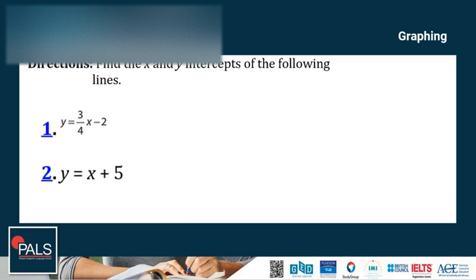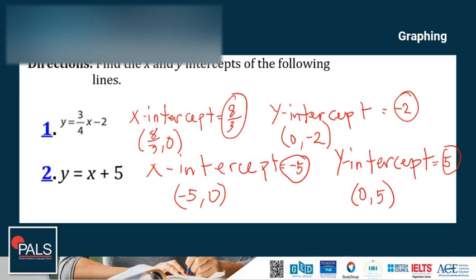Let's have a simple drill. Find the X and Y intercepts of the following lines. You can pause the video, answer questions 1 and 2, then continue to check your answers. For equation 1: X-intercept is 8/3, ordered pair (8/3, 0); Y-intercept is -2, ordered pair (0, -2). For equation 2: X-intercept is -5, ordered pair (-5, 0); Y-intercept is 5, ordered pair (0, 5).